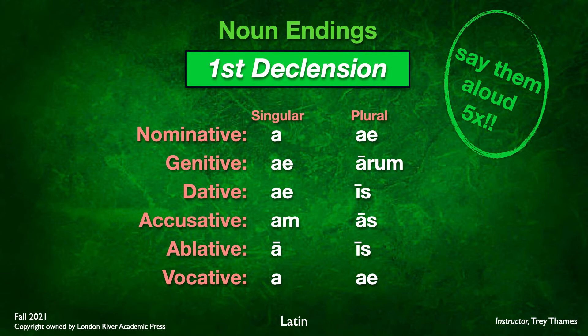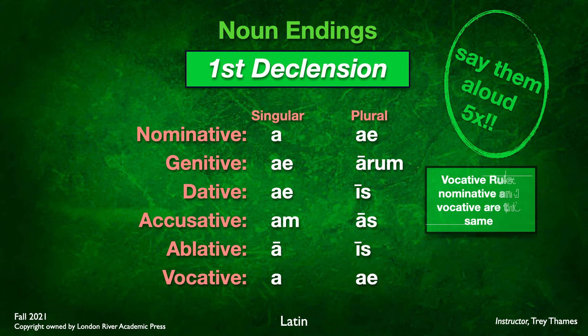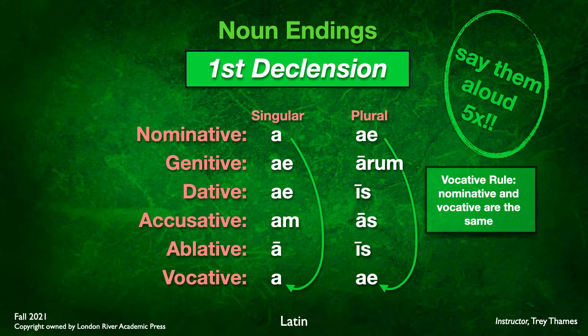I also want to point out that eventually our chants are going to drop the vocative case because it's not used very often. Our chants will simply have nominative, genitive, dative, accusative, and ablative. But for this chapter and the next one or two, we will include vocative. Notice the vocative rule: whatever is in the nominative, the vocative is exactly the same. So nominative singular is A, vocative singular is A. Nominative plural is AE — pronounced like the word 'aisle' — and vocative plural is the same.